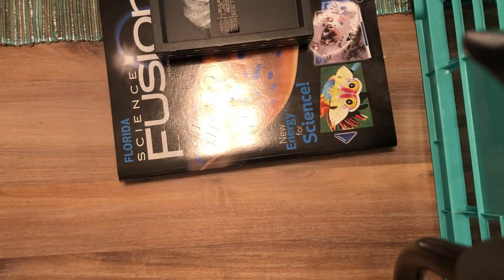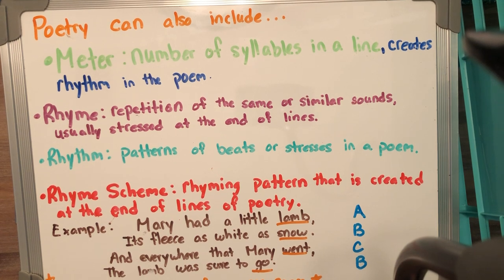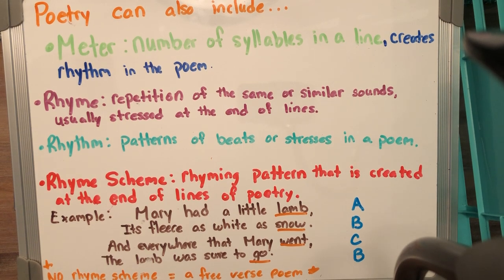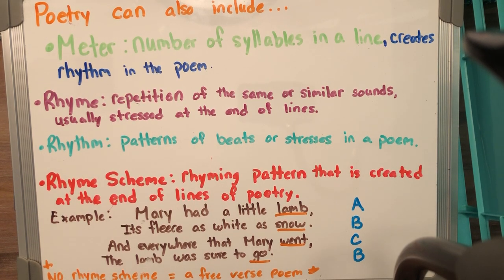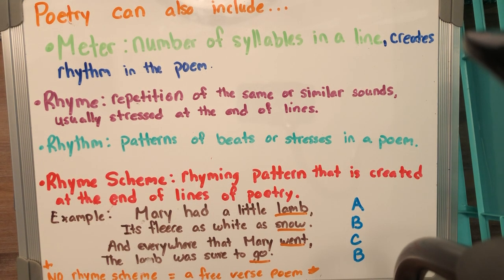Poetry has a lot going on with it. Poetry can also include the following — and like I said, not all poetry has all of this or follows everything. They have a meter, which is the number of syllables in a line. Some words have three syllables, some have two. Meter also helps create the rhythm in the poem, because of those syllables and the way that you enunciate those lines — you get a little bit of rhythm going on that you can feel and hear as you're reading.